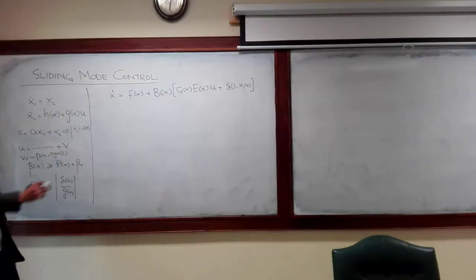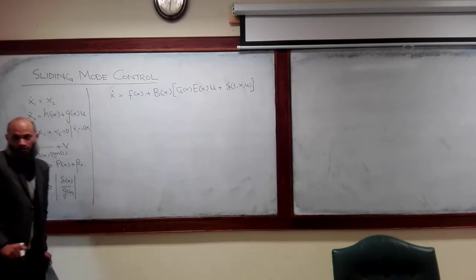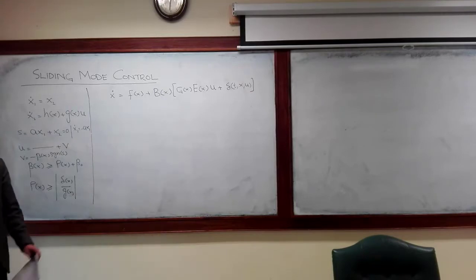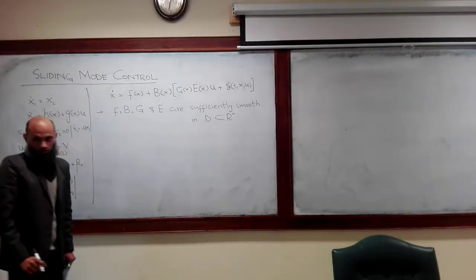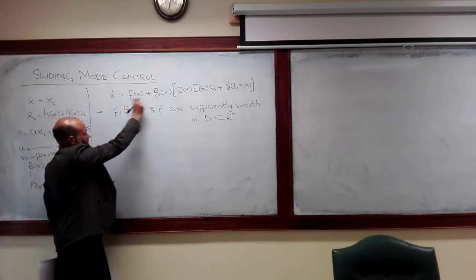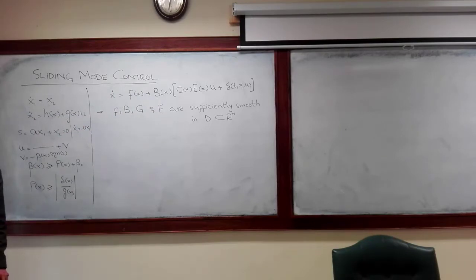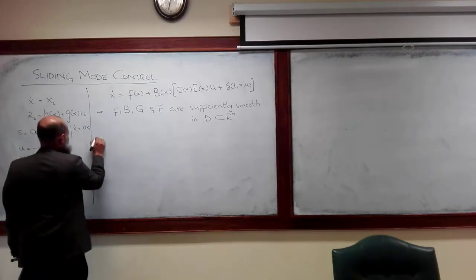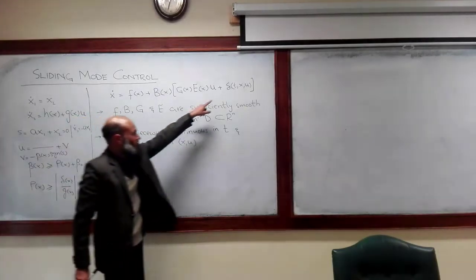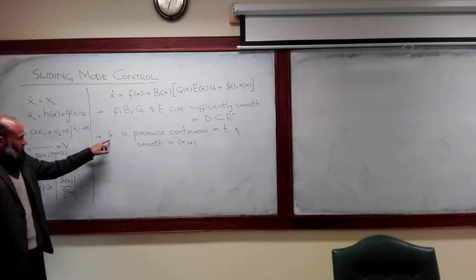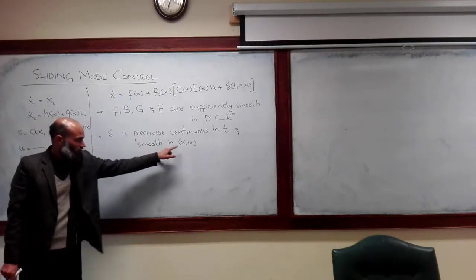In today's lecture, we shall talk about more general systems given by these state equations. Here we make a few assumptions. The first assumption is that these functions are sufficiently smooth — that is, their derivatives exist because we shall need to compute them. The second assumption is that delta of x, which is an uncertainty in the system, is piecewise continuous and smooth — that is, its derivatives with respect to the states exist and are piecewise continuous.